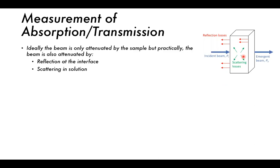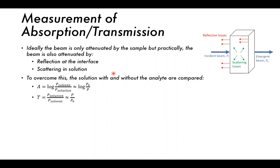In an ideal world, the beam is only attenuated or reduced by the sample, but practically the beam is also attenuated by reflection at the interface — both walls that the light passes through can result in reflection. Or we can have scattering in solution by different particles, whether those be the analyte particles, the solvent particles, or other components of the solution. To overcome this problem, the solution with and without the analyte are compared.